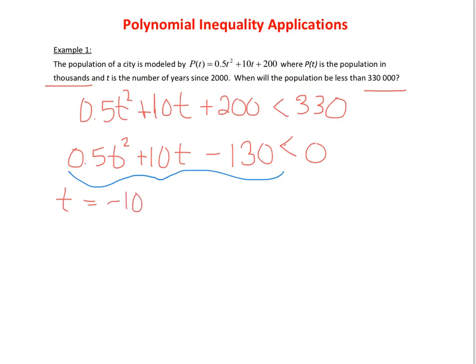So we're going to get negative 10 plus or minus. In our square root, we're going to get 100 minus 4 times 0.5 times negative 130. And when you do that math, you're going to get 360 under the radical. And of course, 2 times 1, that's actually all over 1, so that's kind of nice.